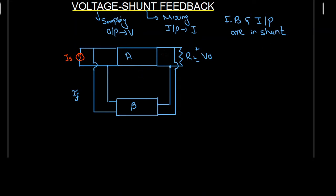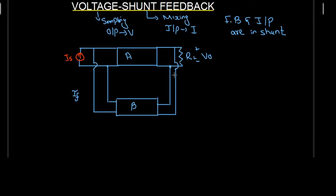So this is the arrangement of voltage shunt feedback. At the output side we have voltage V0, and this voltage V0 is fed back. At the input side we are going to have a current source, and let's say the current flowing into the amplifier is II. Now the output is voltage and the input is II. So the gain of this amplifier is going to be equal to V0 divided by II, which means that V0 is going to be equal to A times II. So this is one of the equations for the output voltage.